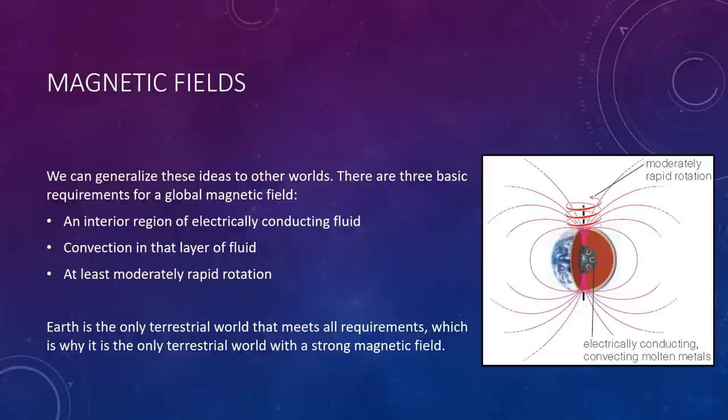Mercury, however, remains an enigma. It possesses a measurable magnetic field, despite its small size and slow 59-day rotation. The reason for this may be Mercury's huge metal core, which may still be partially molten and convecting.